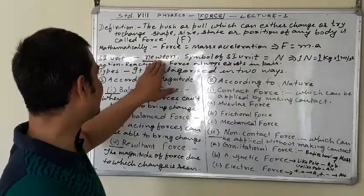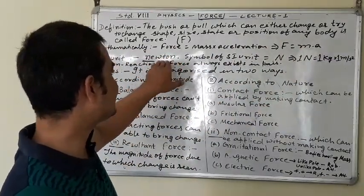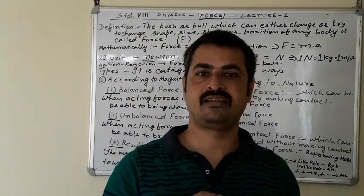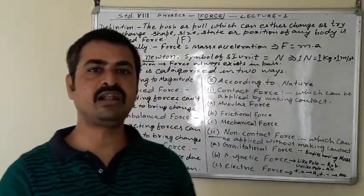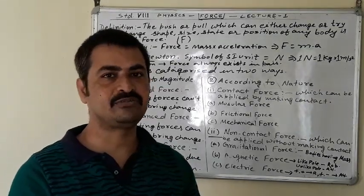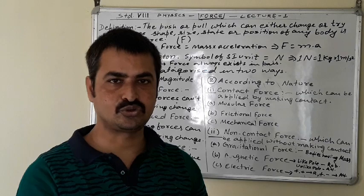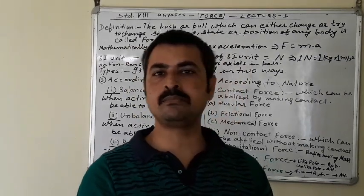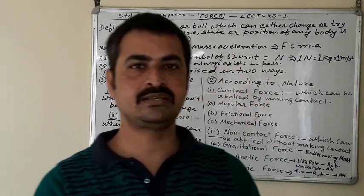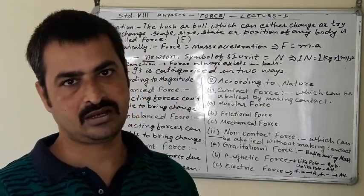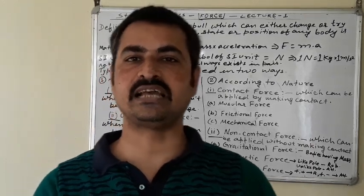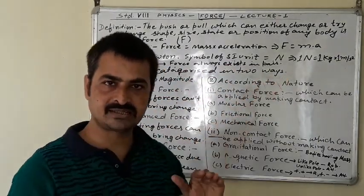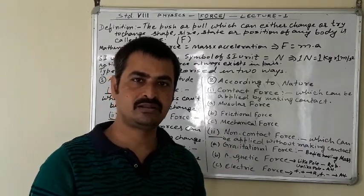Force is represented as F and its SI unit is Newton. Newton written with a small 'n' is the SI unit of force; if written with a capital 'N' it becomes the name of the scientist. So write Newton with a small 'n', or use only the capital symbol N, to represent the SI unit of force.